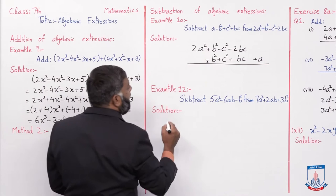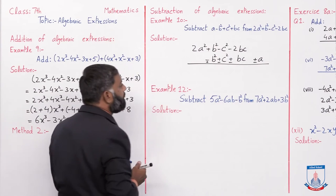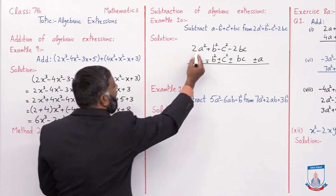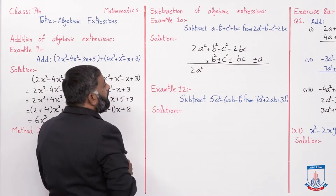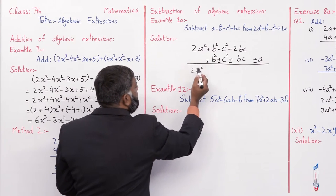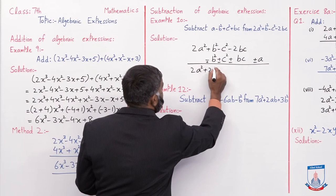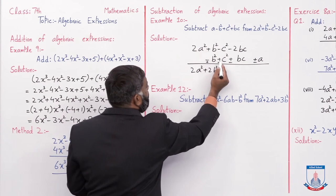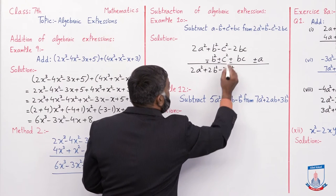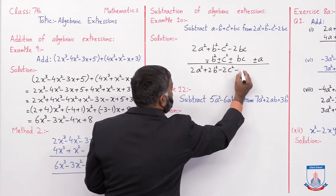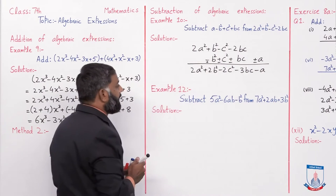Ab subtract karte hain: jis expression ko subtract karna hai, uske signs change ho jaenge. Minus plus ho jaega, plus minus ho jaega, plus minus, plus minus. Ab: 2a² ke neeche koi term nahi, to 2a² as it is. Plus b² + b² = plus 2b². Minus c² - c² = minus 2c². Minus 2bc - bc = minus 3bc. Aur minus a. Yeh iska answer hoga.